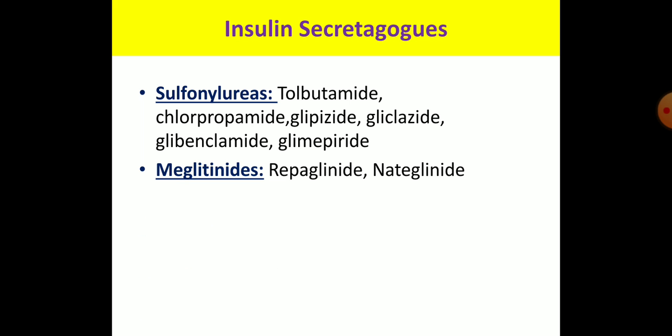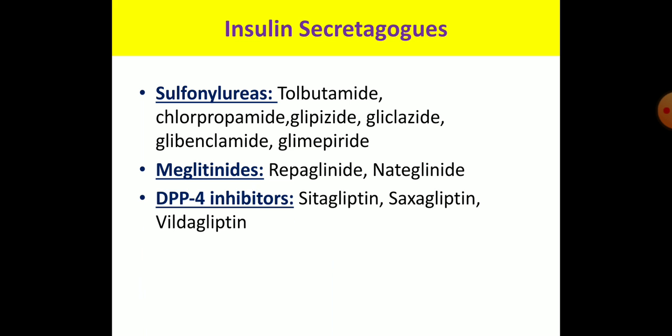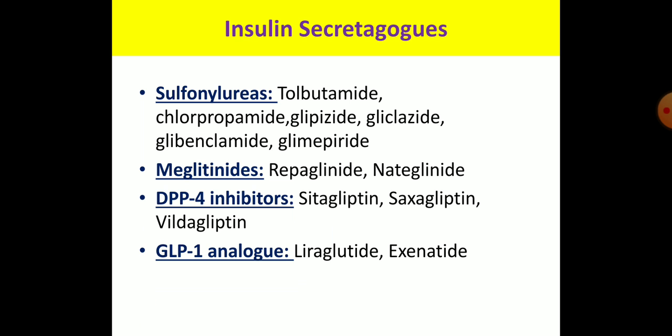The meglitinides are repaglinide and nateglinide. Both sulfonylureas and meglitinides share the same mechanism of promoting insulin release from beta cells. DPP4 inhibitors — dipeptidyl peptidase 4 inhibitors — are all the gliptins: sitagliptin, saxagliptin, and vildagliptin. GLP-1 analogs — glucagon-like peptide-1 analogs — are liraglutide and exenatide. These are all the insulin secretagogues.